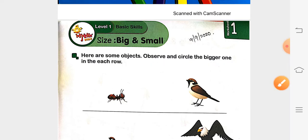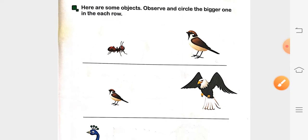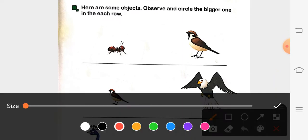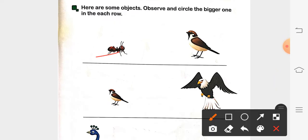So let us check the first one. First one is ant and a bird. So which is bigger? Ant? No. Ant is small. So which one we are going to circle? Hum circle karenge bird ko. Toh aapko circle karna hai bird ko.